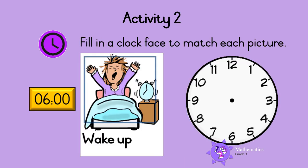Activity two: fill in a clock face to match each picture. It is six o'clock in the morning and time for you to wake up. Show this time on the analog clock. The short hour hand must point to six, and the long minute hand must point to twelve, which is zero minutes.